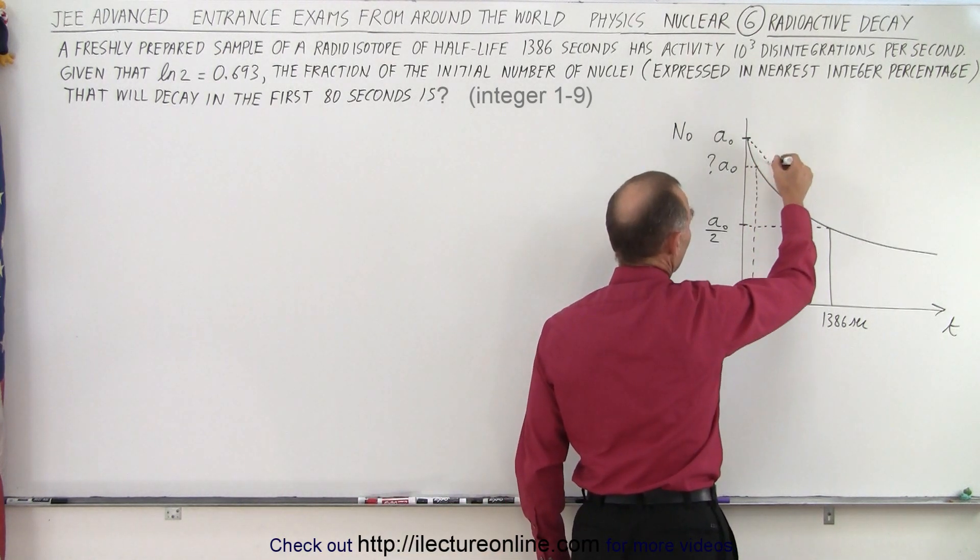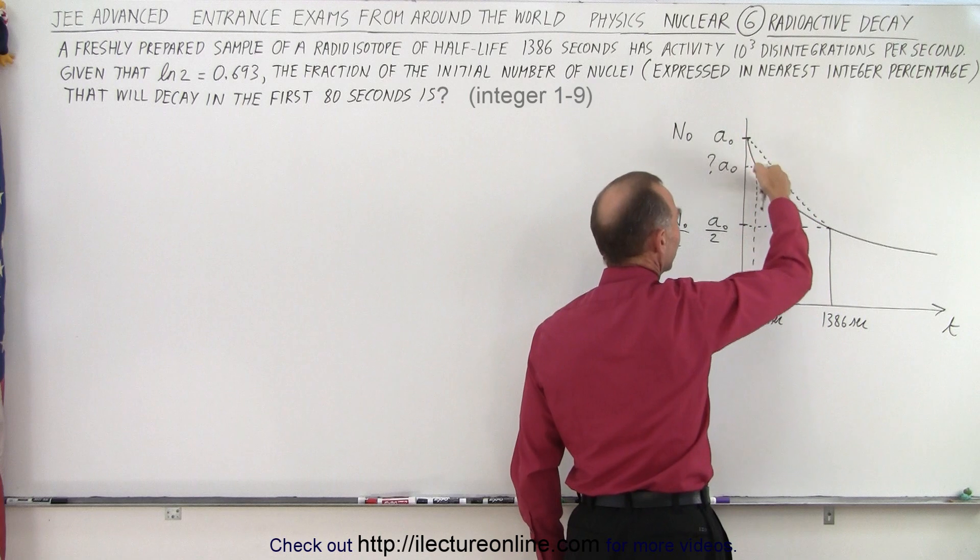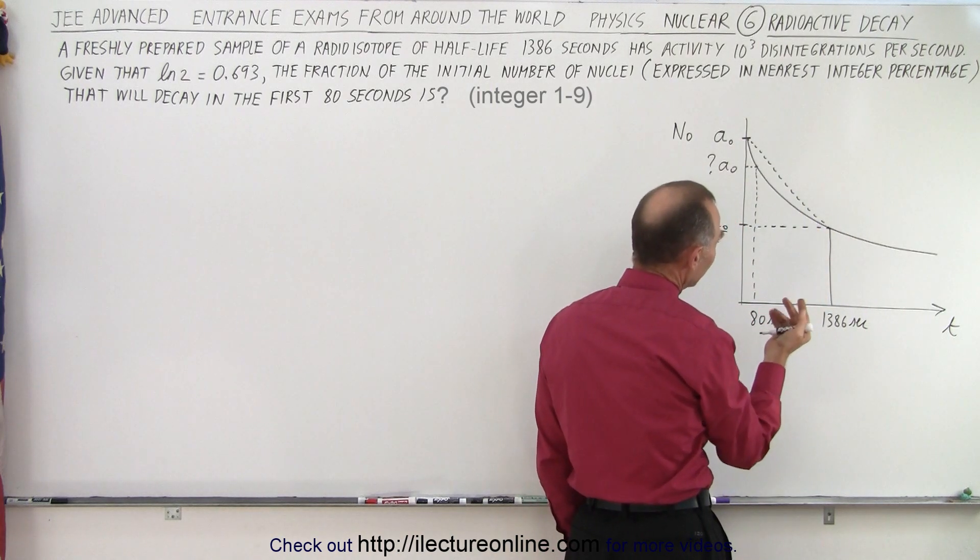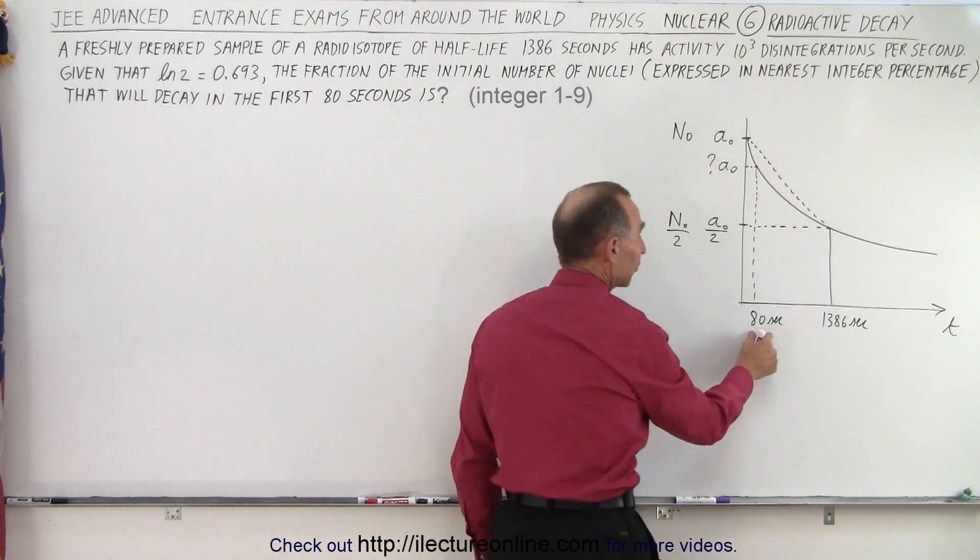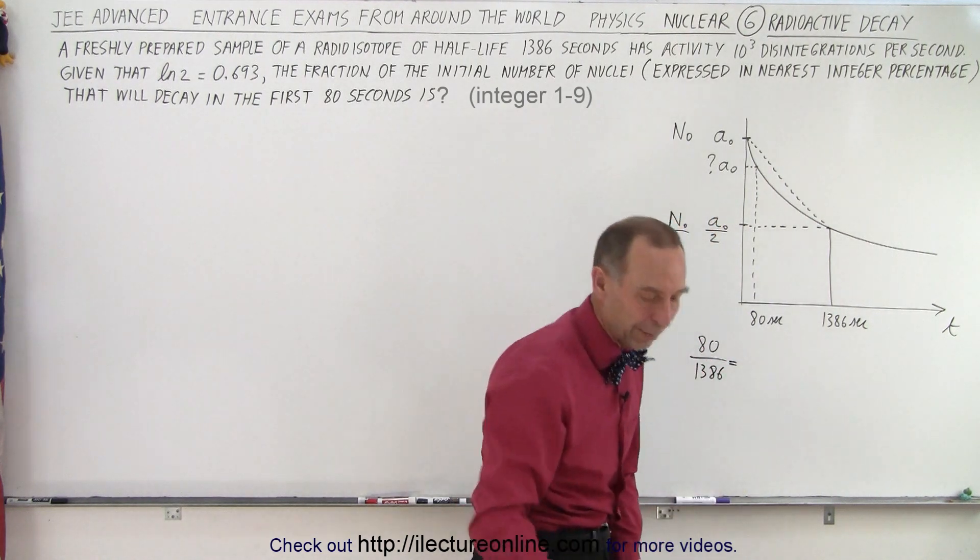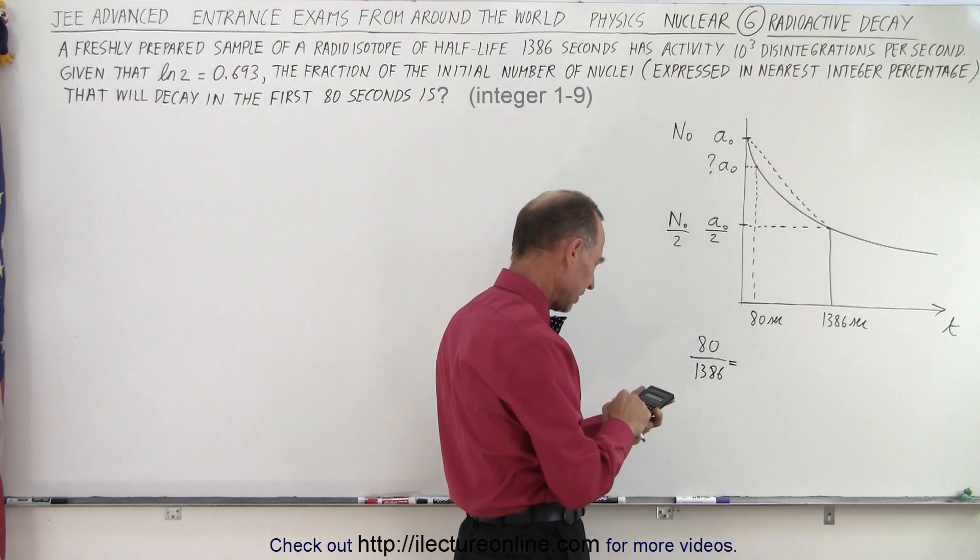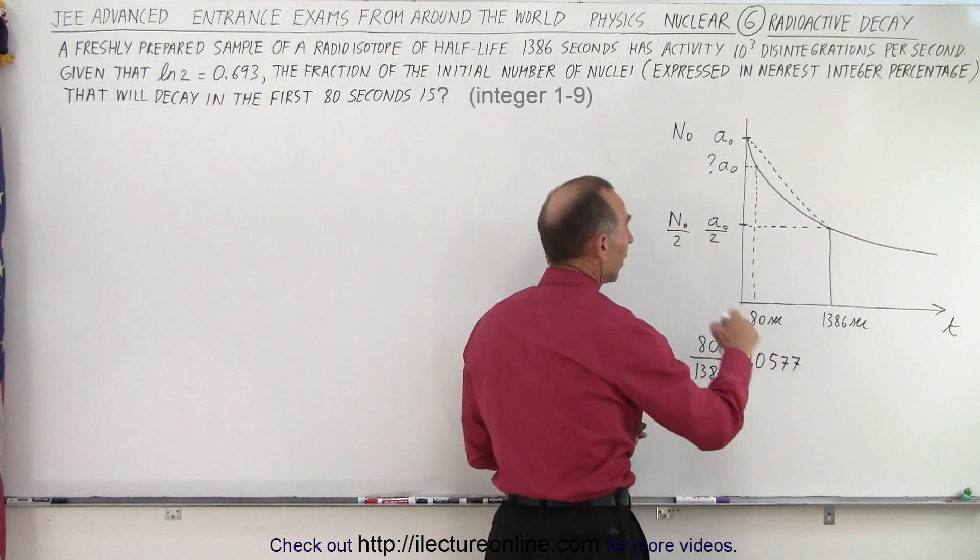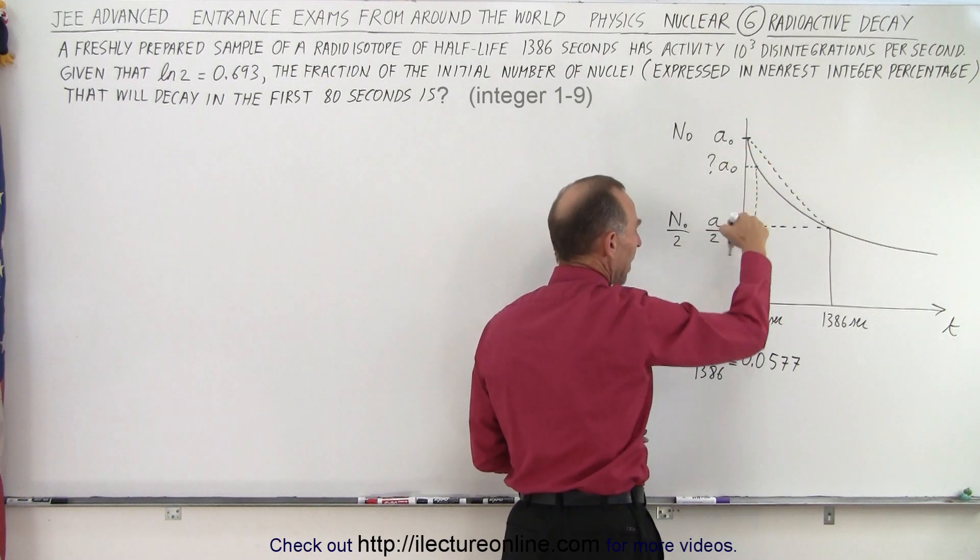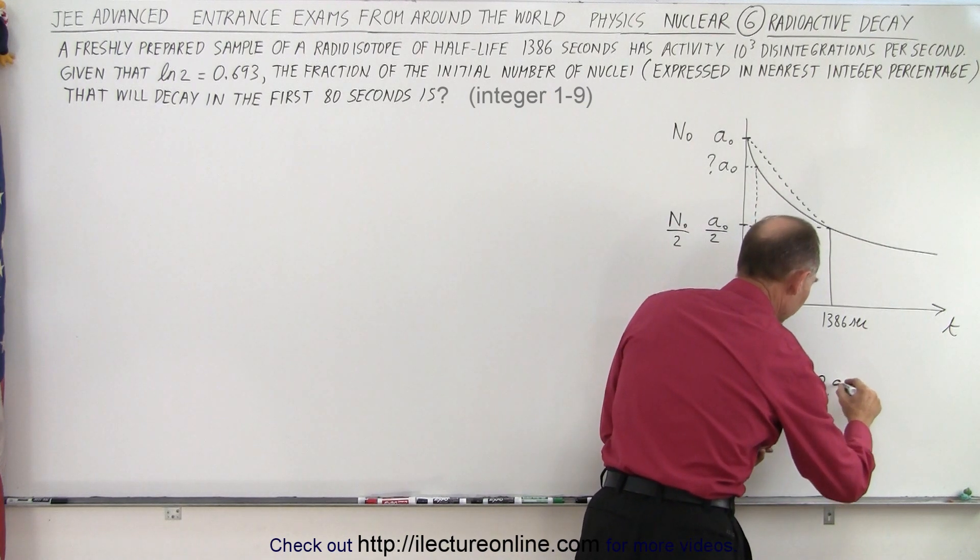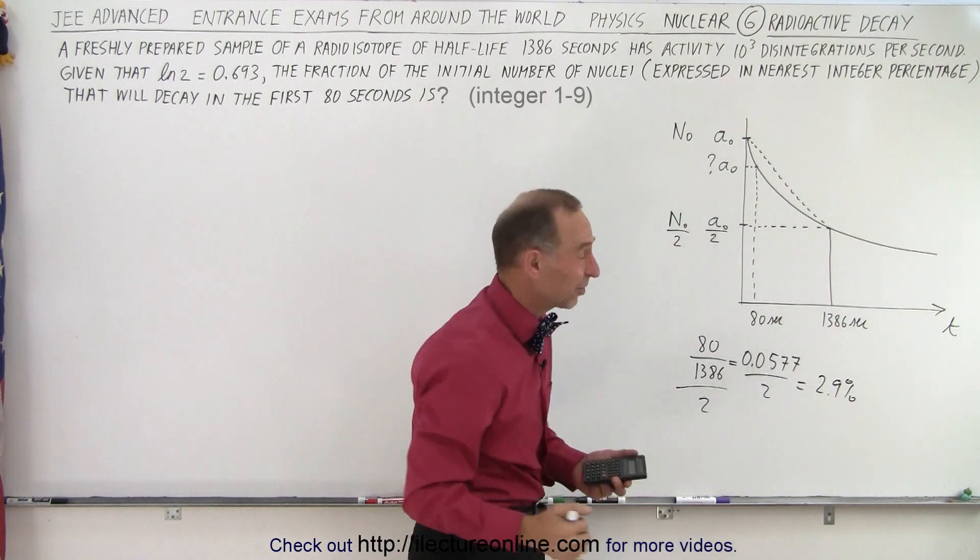Now if we draw a straight line, notice that the rate of disintegration doesn't come down as a straight line—it's not a linear function, it's a logarithmic function. But if it was a straight line, we could simply take a ratio of the time elapsed to the half-life time. So if we take 80 divided by 1386, I'm going to cheat and grab a calculator to do this quickly: 80 divided by 1386, we get 0.0577. But notice we also want to go to half the original amount, so we have to divide that by 2, and so we get 2.9 percent essentially.